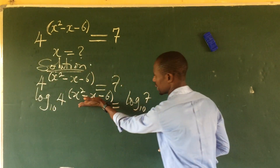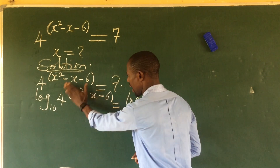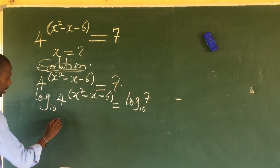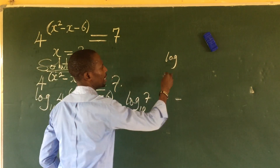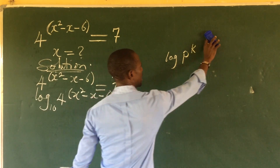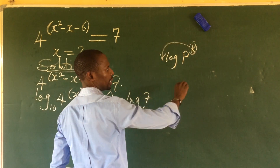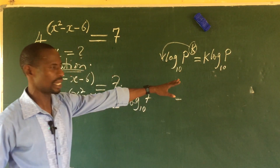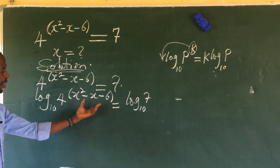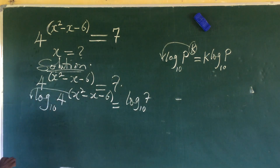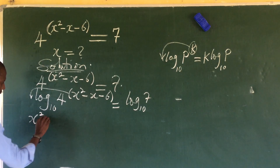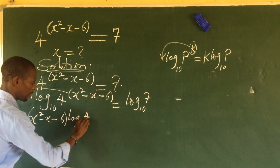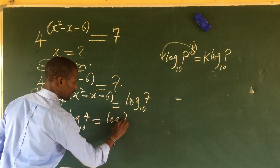We have an exponent to handle. According to the law of logarithms, if you have log(a^k) you move the exponent k forward to get k·log(a). Applying that law here, we move the exponent down: (x² − x − 6) · log₁₀(4) = log₁₀(7).